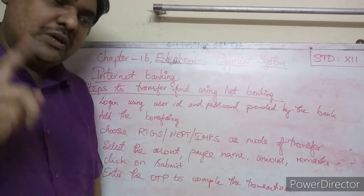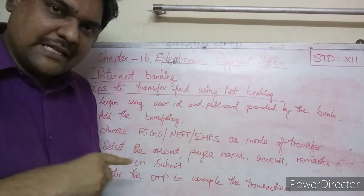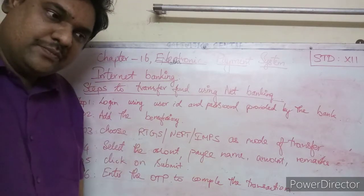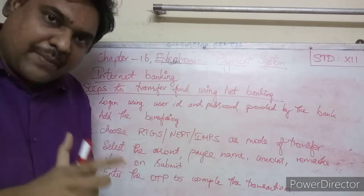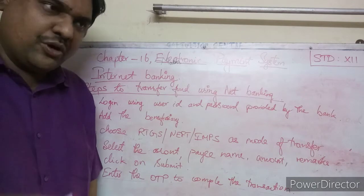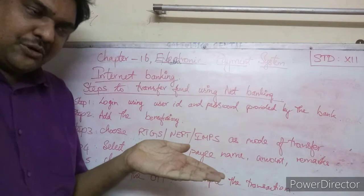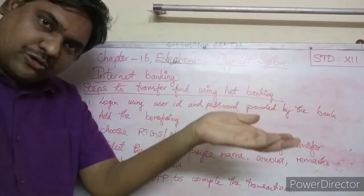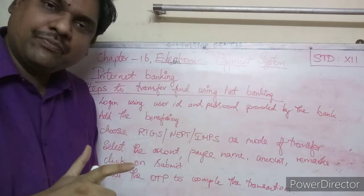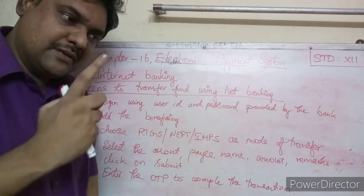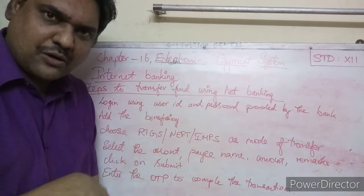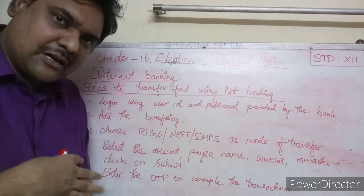In the beneficiary section, you need to enter the details of the person to whom you want to transfer the amount — their name, bank account number, bank name, and IFSC code. Enter all the details correctly. Within one or two days, the beneficiary account will be added and activated for transfer.